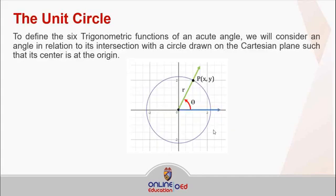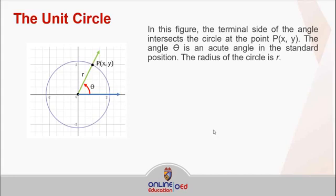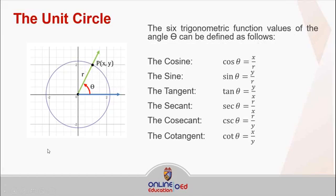To define the 6 trigonometric functions of an acute angle, we will consider an angle in relation to its intersection of the circle drawn on the Cartesian plane such that it centers at the origin. In this figure, the terminal side of the angle intersects the circle at the point P(x, y), and the 6 trigonometric function values can be defined as follows.